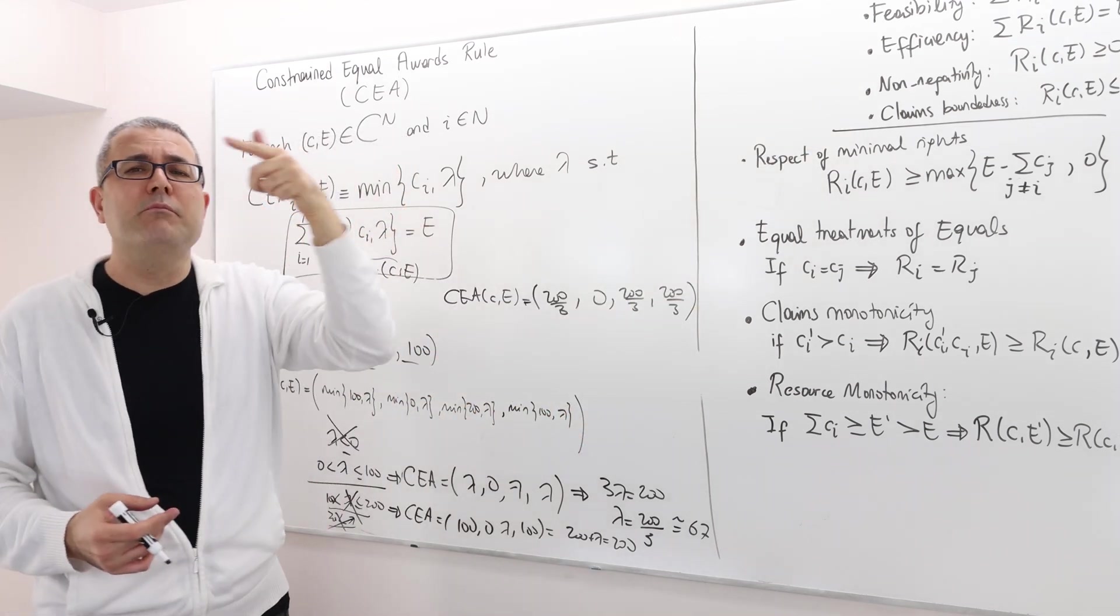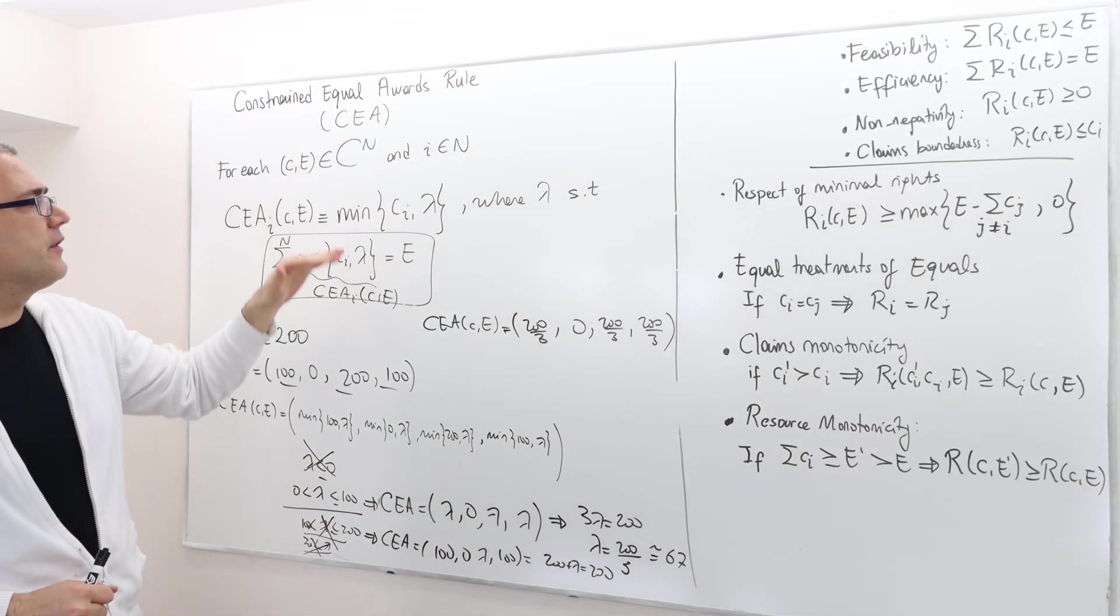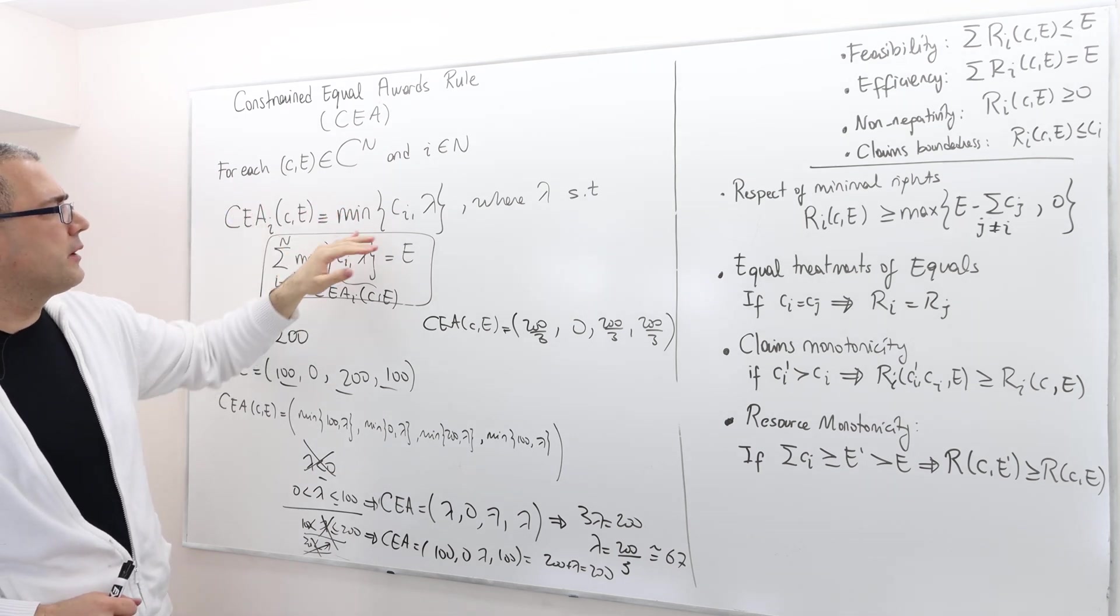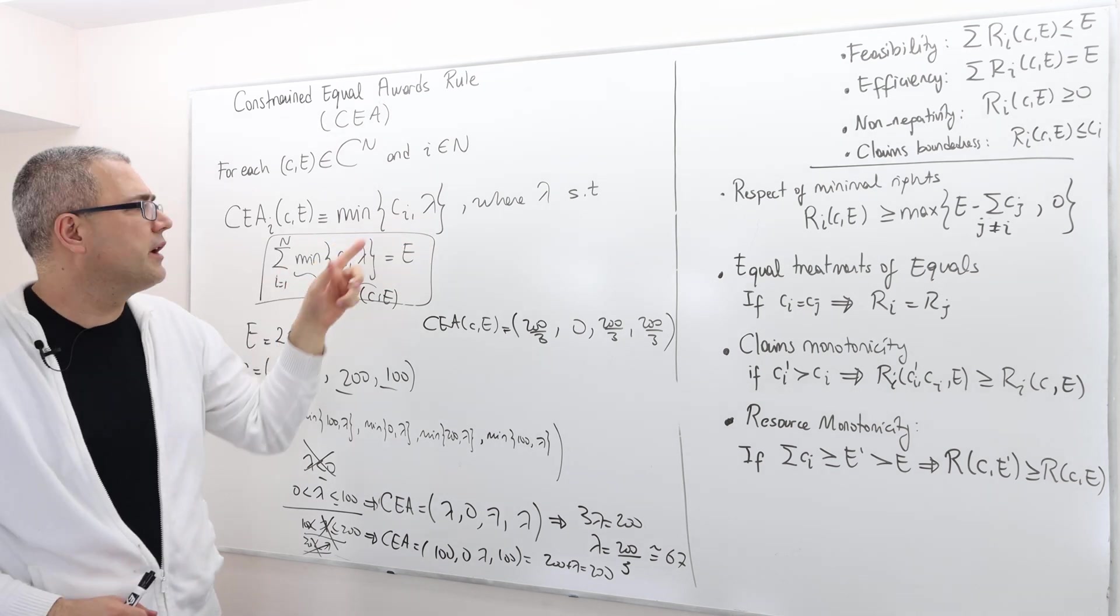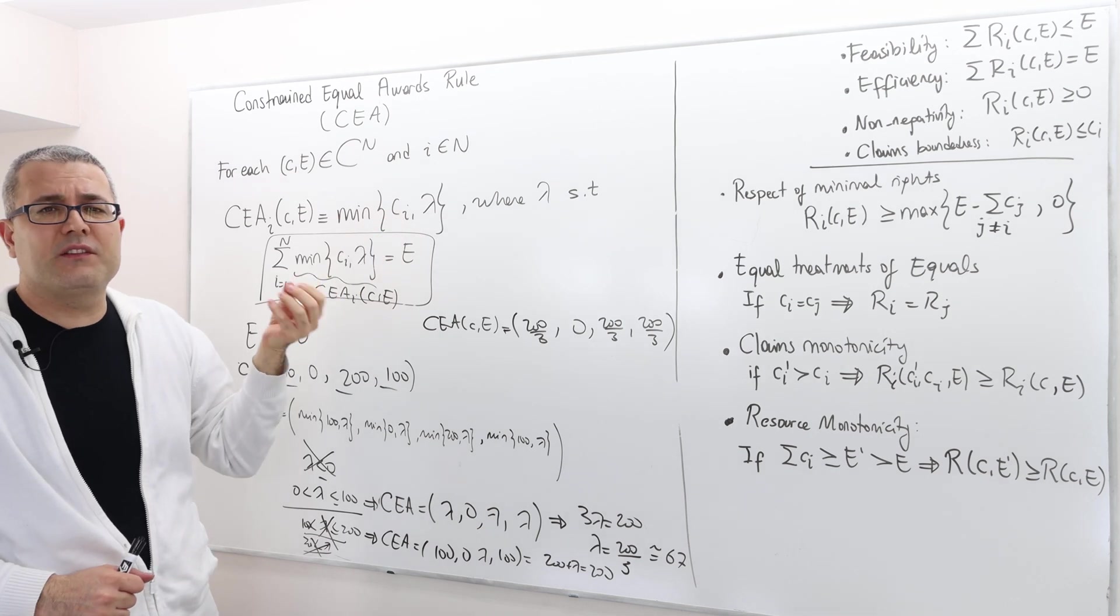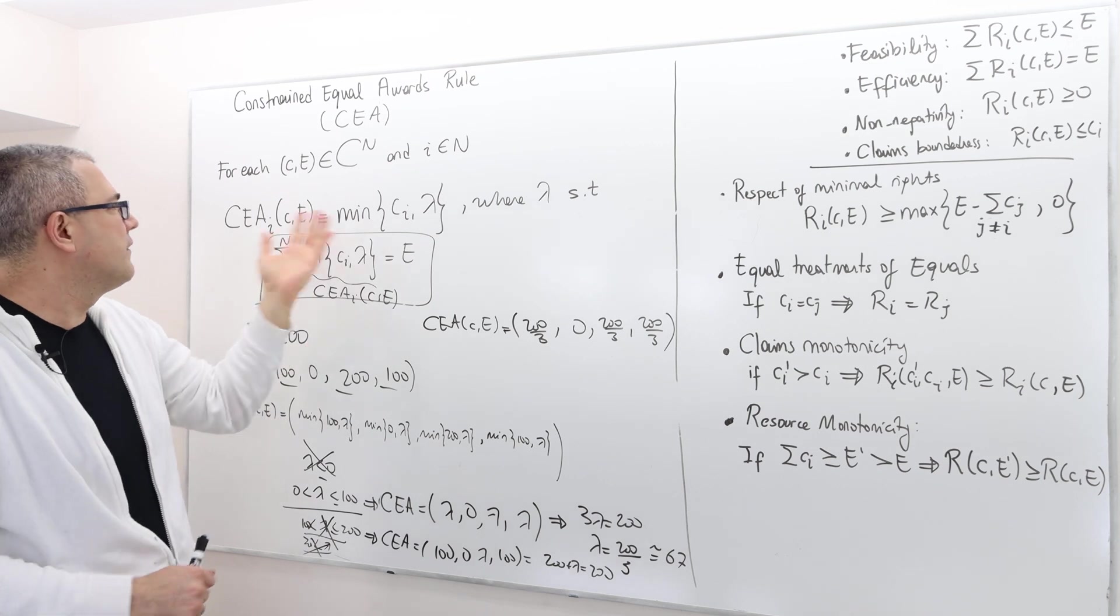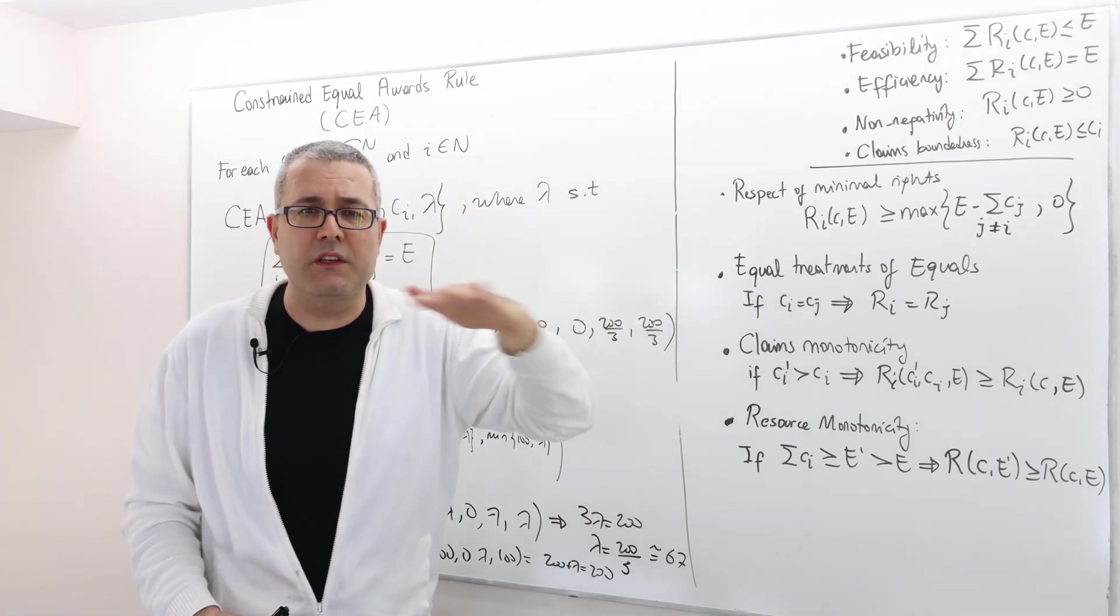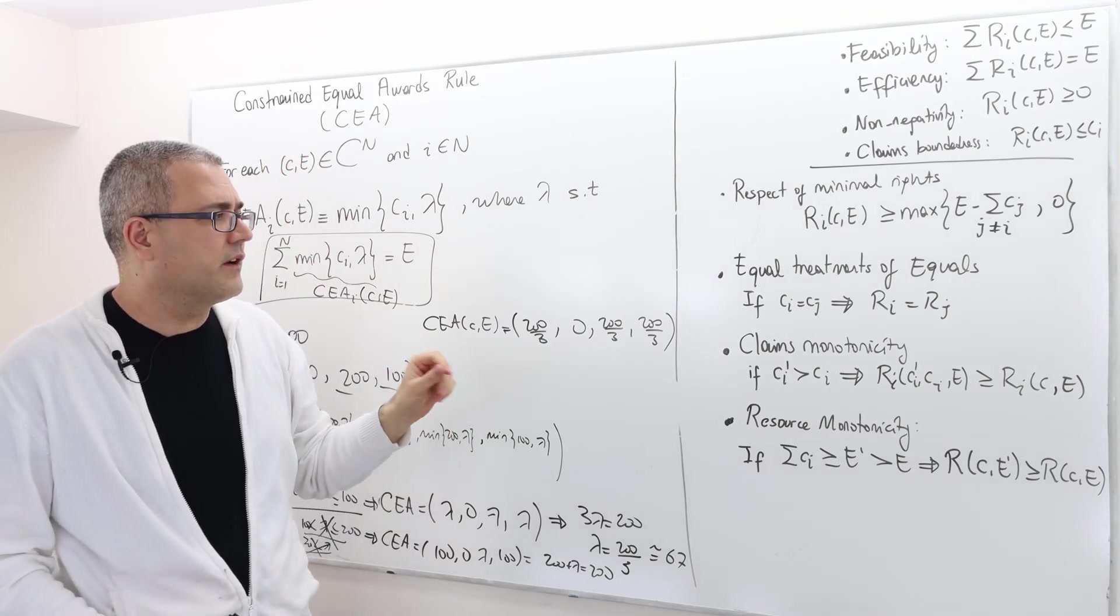Equal treatment of equals is obviously satisfied because the award for each player is the minimum of ci and lambda. So if player i and j, well, all the players have exactly the same lambda. If player i and j have exactly the same claim, then they will have to have the same award. Equal treatment of equals is clearly satisfied and I think it's very obvious.